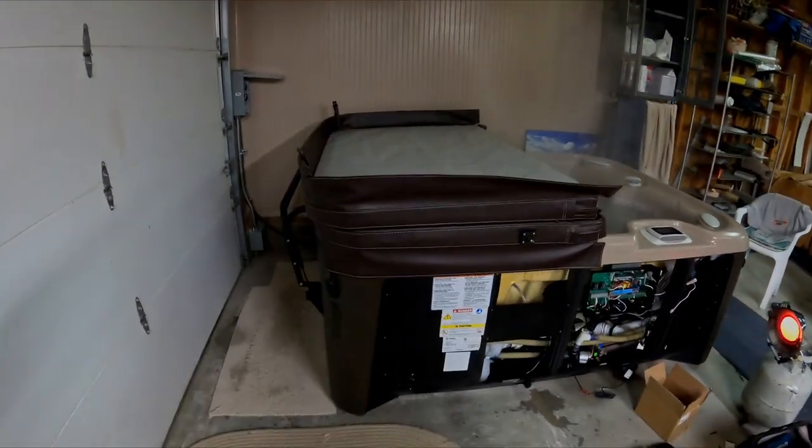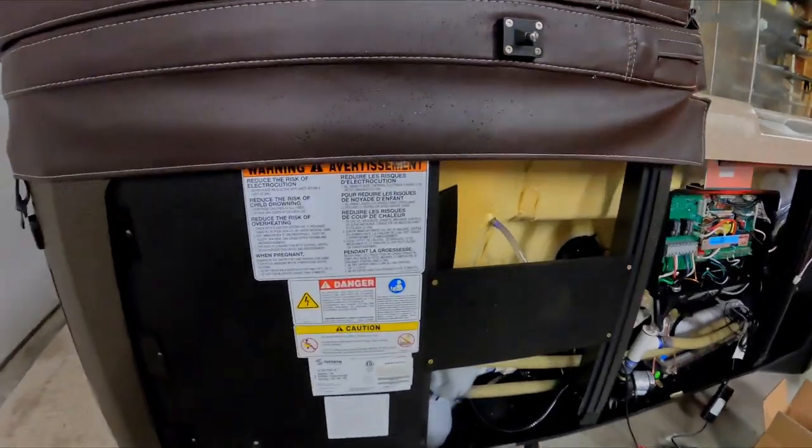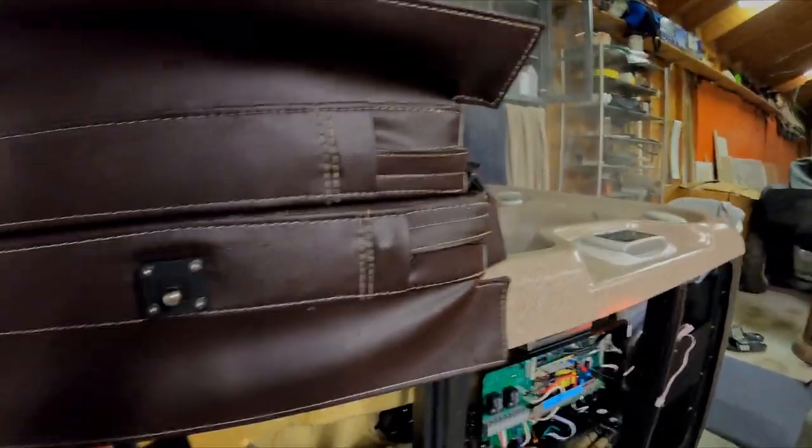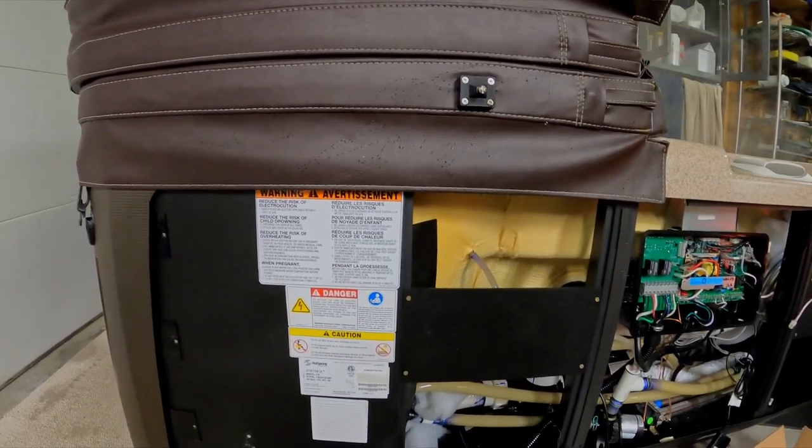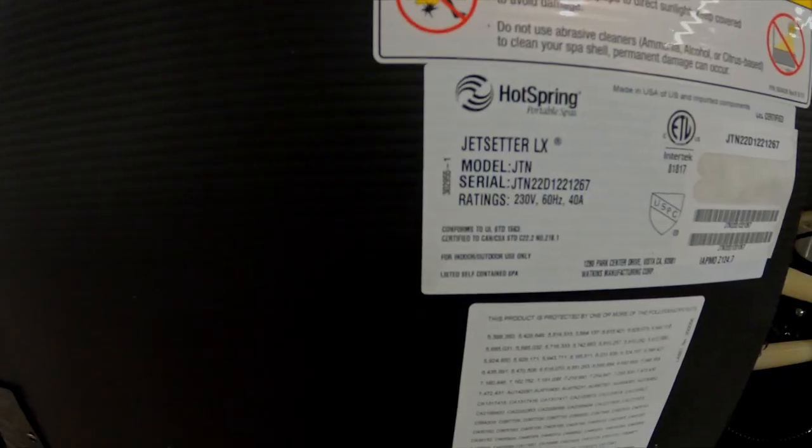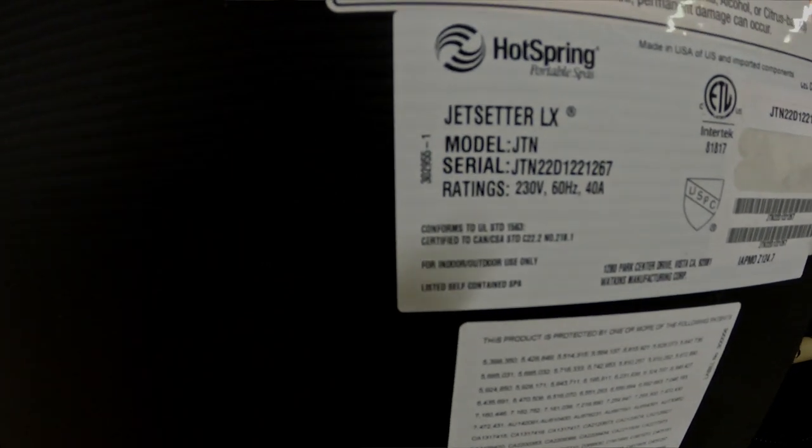Hey guys, Pete with Leisure Time here. What we're doing today is removing the salt system on a 2022 Jet Setter and going back to the ozone setup. Our serial number is located just behind the panel.